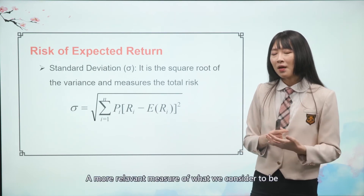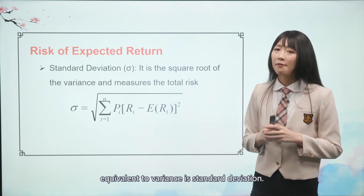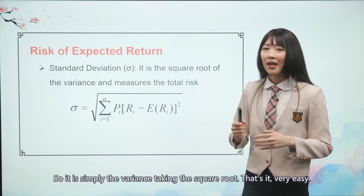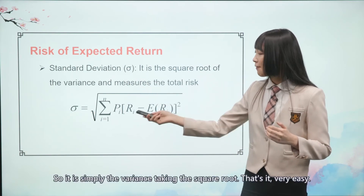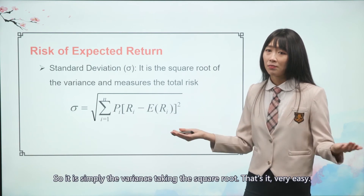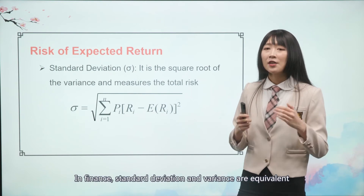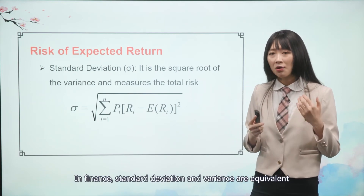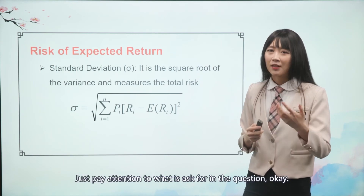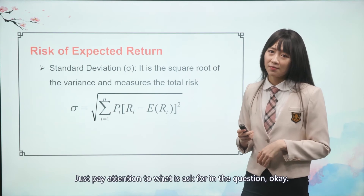A more relative measure equivalent to variance is standard deviation. It is simply the square root of variance — that's it, very easy. In finance, standard deviation and variance are equivalent when measuring total risk. Just pay attention to what is asked for in the question.